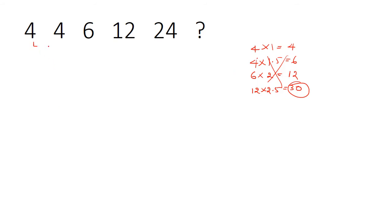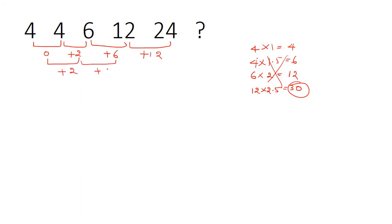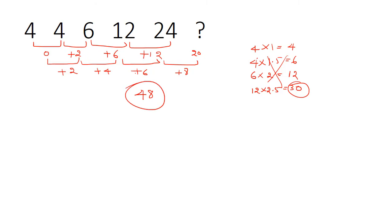Taking differences: 4 minus 4 is 0; 6 minus 4 is plus 2; 12 minus 6 is plus 6; 24 minus 12 is plus 12. Taking the second differences: plus 2, plus 4, plus 6 — these increase by 2 each time. So the next second difference is plus 8. That means the next first difference is 12 plus 8 equals 20. Adding 20 to 24 gives 44... so the answer is 44. Wait — 20 plus 24 is 44, making our answer 44.